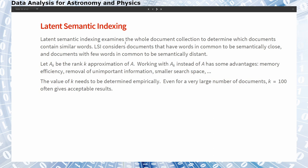When A_k is the rank k approximation of A, working with A_k instead of A has some advantages. We need less memory. We remove unimportant information. The search space is smaller. Given the fact that when we have many documents and many possible words, our matrix A becomes quickly very huge. At some point it's only possible to work on approximations, lower dimensional approximations of the matrix A. However, the explicit choice of the value of k is an empirical choice. We need some experience to actually choose a good rank approximation. But even for large documents, k of one might give already acceptable results.